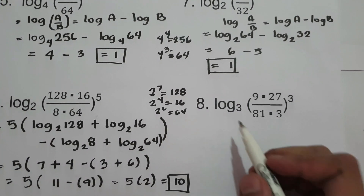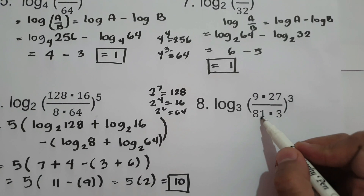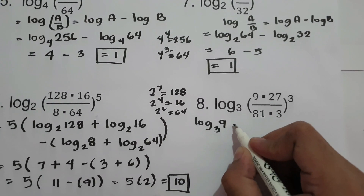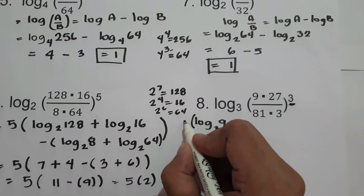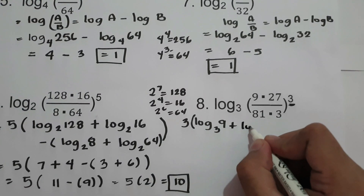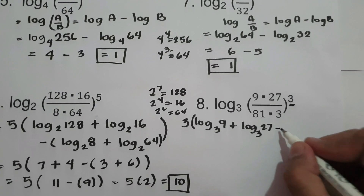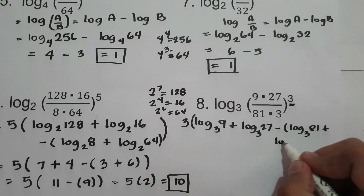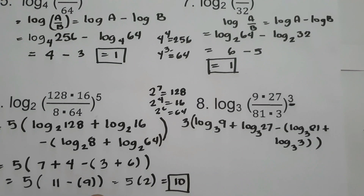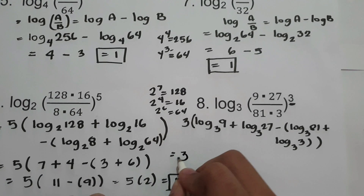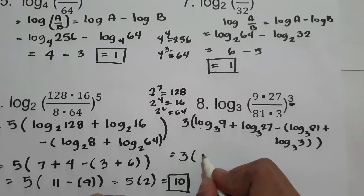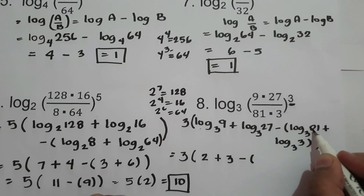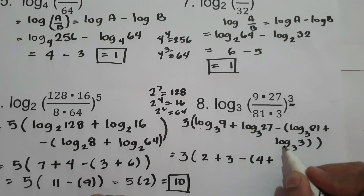For our last example, we have log of the quantity 9 times 27 over 81 times 3, all raised to the 3rd power, base 3. We bring the exponent 3 to the front and expand: 3 times log 9 base 3, plus log 27 base 3, minus log 81 base 3, plus log 3 base 3. Evaluating each: log 9 base 3 is 2, log 27 base 3 is 3, log 81 base 3 is 4, and log 3 base 3 is 1.